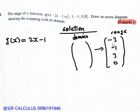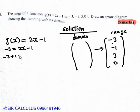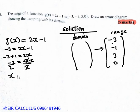We substitute g(x) = -3: so -3 = 2x - 1. Collecting like terms: -3 + 1 = 2x, giving -2 = 2x. Dividing both sides by 2, x = -1. So when g(x) = -3, x = -1.